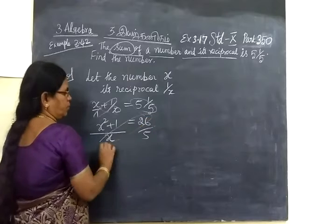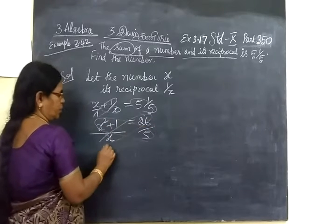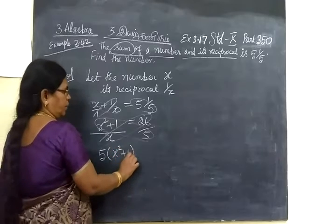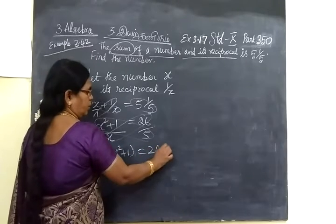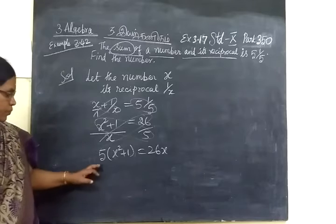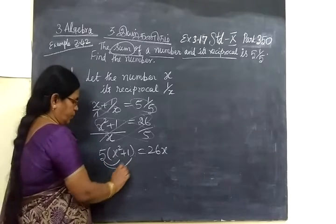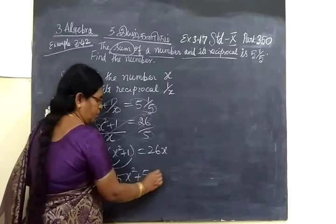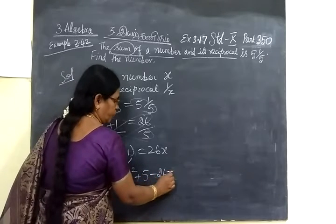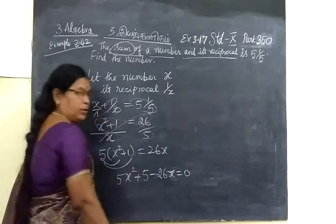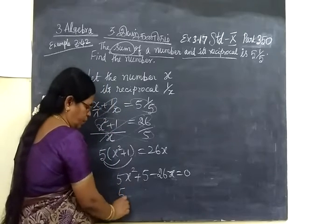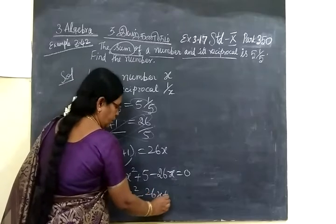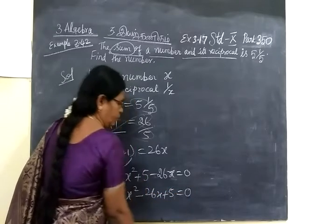Now you cross multiply. So 5 bracket x square plus 1 equal to 26x. So take 5 inside. So 5x square plus 5 minus 26x equal to 0. So write in the standard form: 5x square minus 26x plus 5 equal to 0.